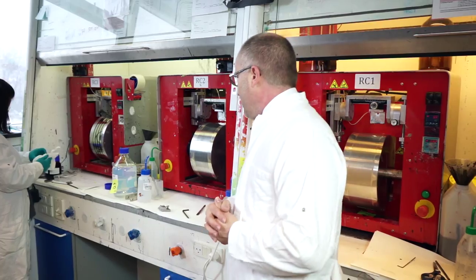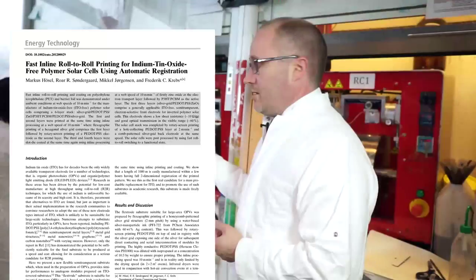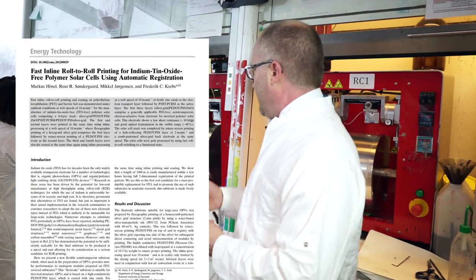Here we have a different type of substrate. It's a flex-toad. So it's a flexor printed silver grid with a rotary screen printed P-dot, semi-transparent P-dot electrode.